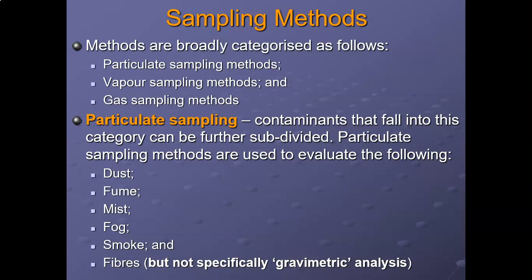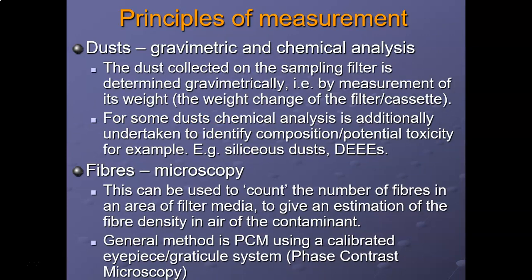There are different types of sampling methods for gases, vapors, mist, etc., and a different type for sampling dust. For dust, gravimetric and chemical analysis is used. The dust collected on the sampling filter is determined gravimetrically by measurement of its weight — the weight change of the filter plus the cassette. Chemical analysis is additionally undertaken to identify composition and potential toxicity, for example siliceous dust and diesel engine exhaust emissions.